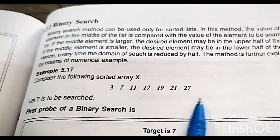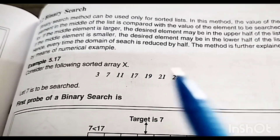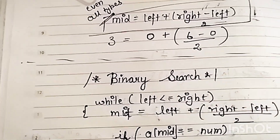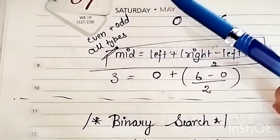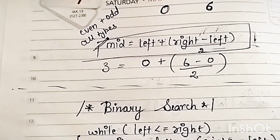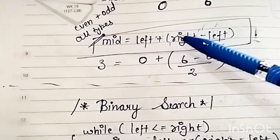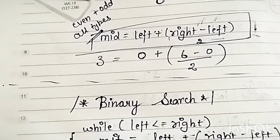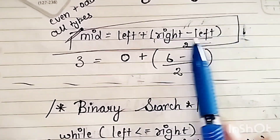If there is an odd number of elements, the compiler finds the exact middle. But if there are an even number of elements, we use the formula: left + (right - left) / 2. This formula works for both even and odd numbers of elements to easily find the middle-most position.